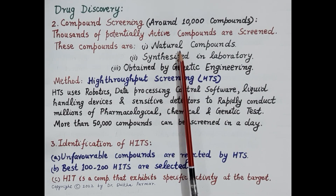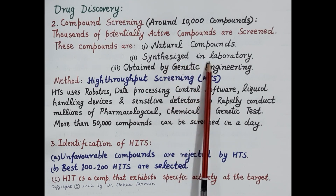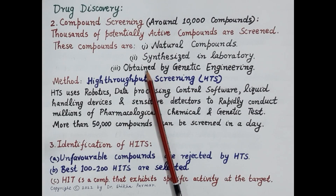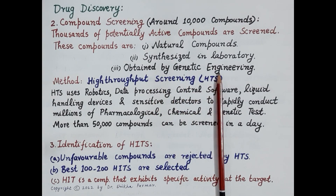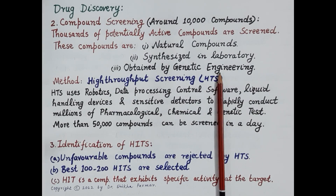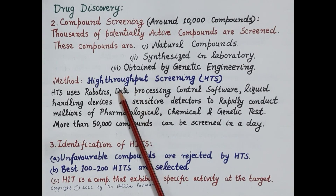Active compounds can also be synthesized in the laboratory. Chemical analogs of natural products or synthetic compounds with known pharmacological activity can be synthesized in the hope of providing superior drugs. A third important source is genetic engineering — several drugs have been produced by recombinant DNA technology, for example human insulin, interferons, etc.